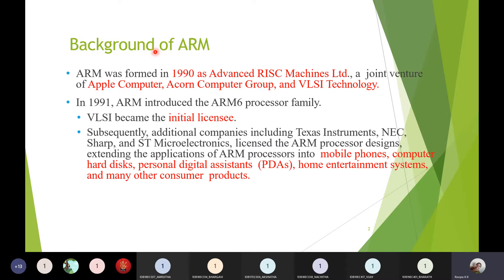ARM was formed in the year 1990. It was started by three companies: Apple Computer, Acorn Computer Group, and VLSI Technology. The original name when it was invented was Acorn RISC Machine, named after Acorn, one of the founding companies. Later it was changed to Advanced RISC Machine.